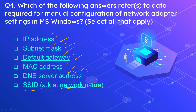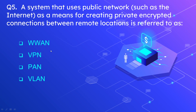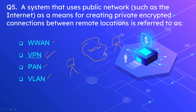Question number 5: a system that uses a public network such as the internet as a means for creating a private encrypted connection between remote locations is referred to as? The options are WAN, VPN, PAN, and VLAN. The correct option is VPN, or Virtual Private Network. The VPN is used for encrypted communication between two hosts over the internet, through an encrypted tunnel.